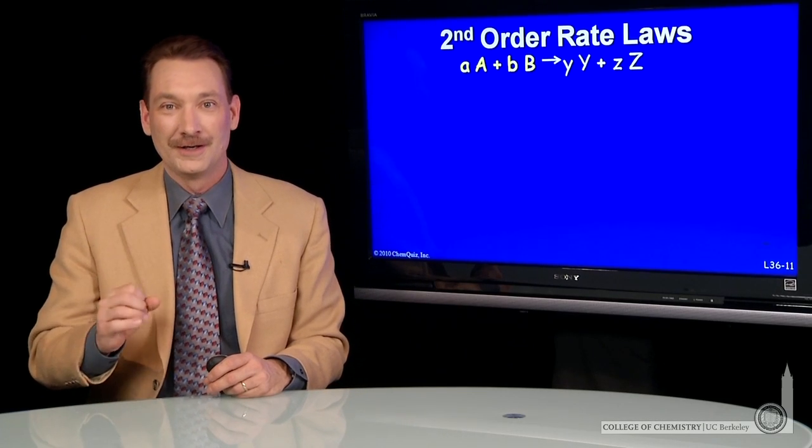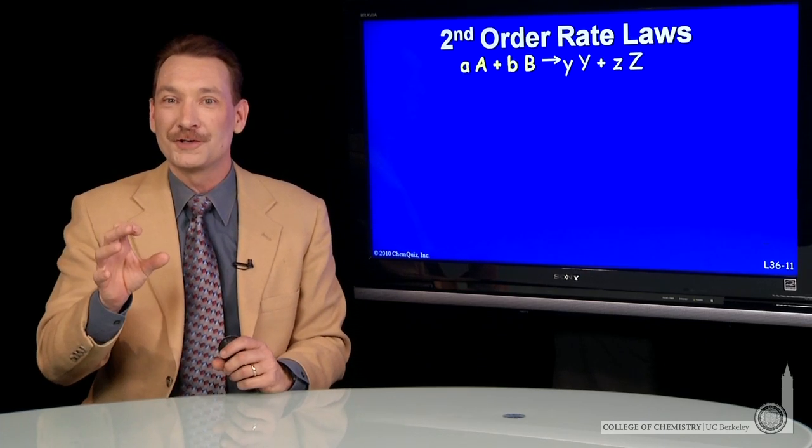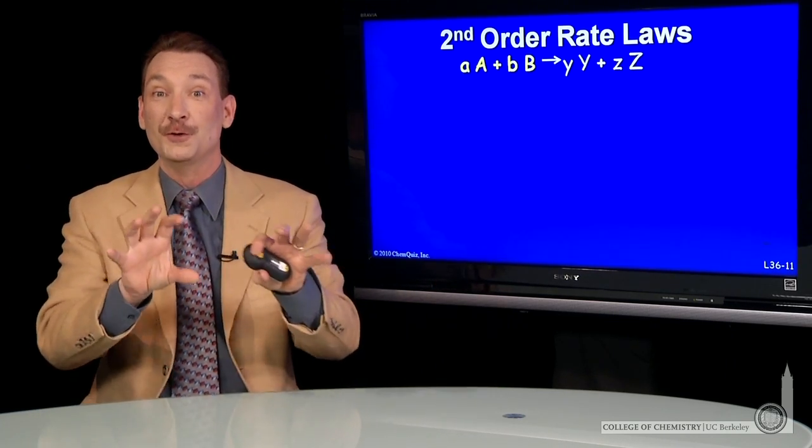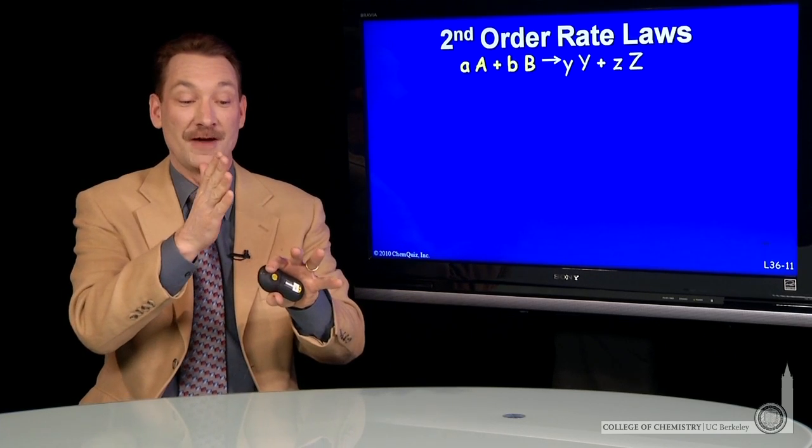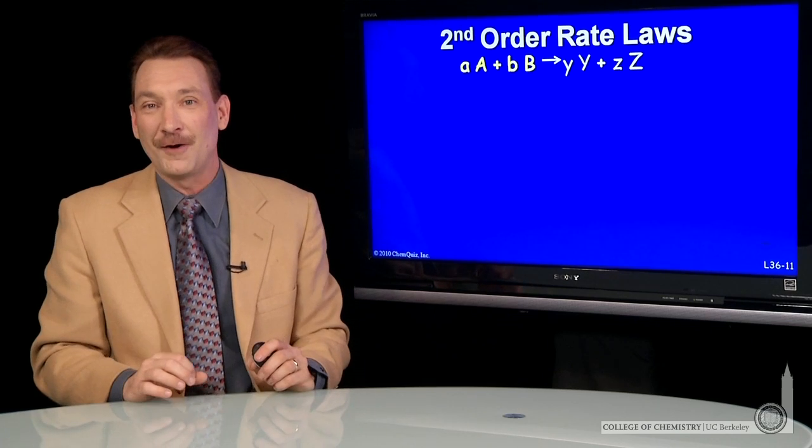Let's look at some second order chemical kinetics. Second order means the rate is proportional to a concentration squared, or the product of two linear concentrations, where the order is 1 plus 1, the sum of the powers.